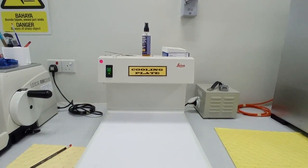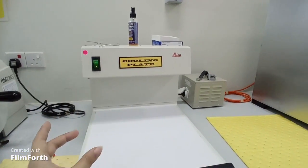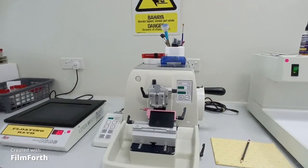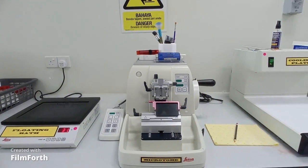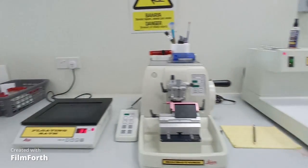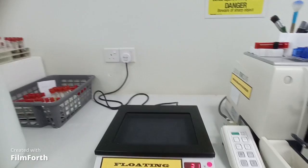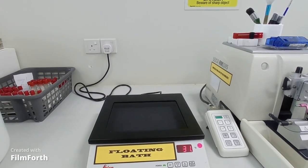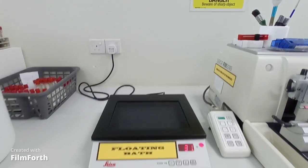This is the cooling plate where we put our blocks to cool them down first. This is a microtome machine where we cut the tissues into thin sections, and this is a floating bath. Here we put the microsections of tissues and scoop them onto the slides.